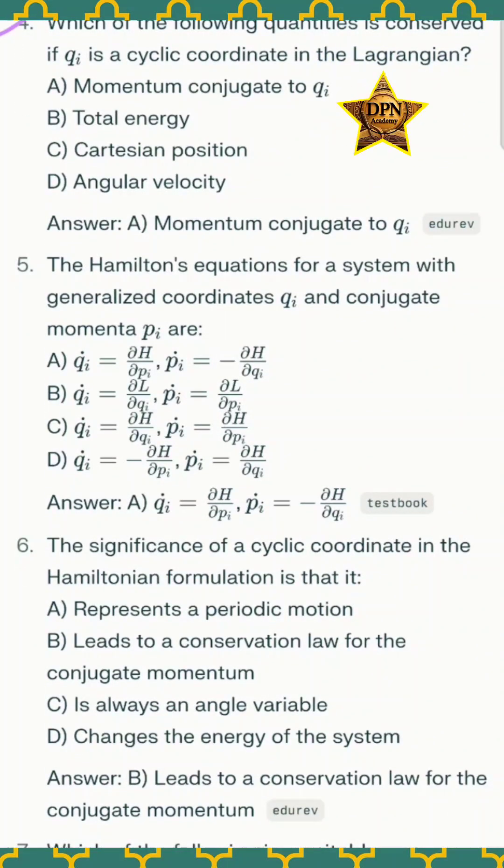Question number four: which of the following quantities is conserved if qi is a cyclic coordinate in the Lagrangian? The correct option A - momentum conjugate to qi.